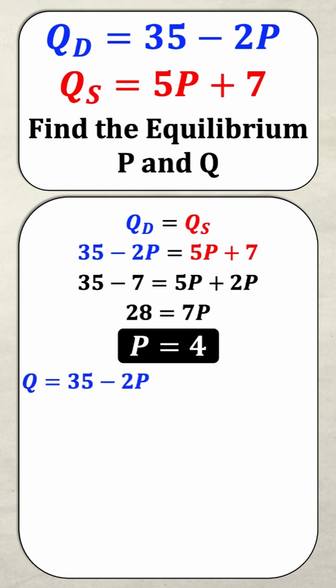So Q is equal to 35 minus 2P. But since I know what P is, I'm going to substitute it in. That's going to give me Q is equal to 35 minus 2 times 4, which is 35 minus 8. And then finally, Q is equal to 27.